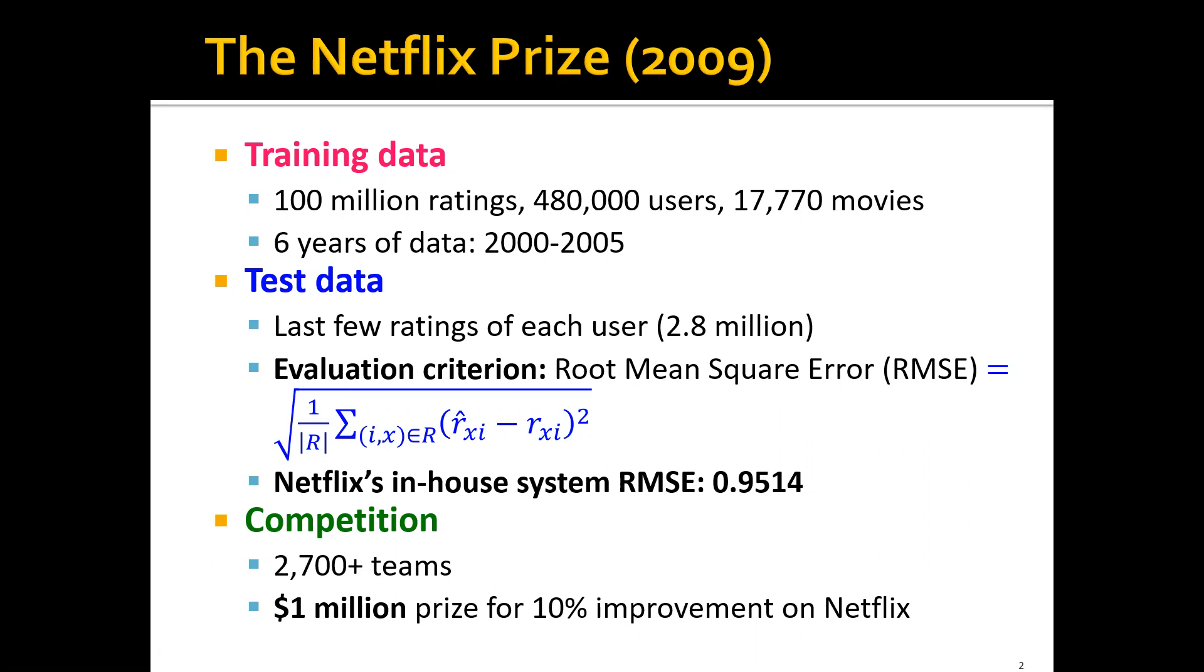These are six years of data from Netflix. The test data is the last few ratings of each user, and this is about 2.8 million ratings. The evaluation criterion is the RMSE that we have talked about before, and the goal is to minimize this RMSE in the test data. As a reference, the Netflix in-house system can produce an RMSE of around 0.9514.